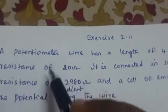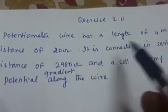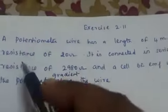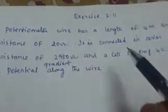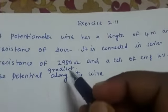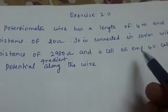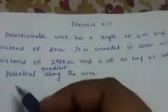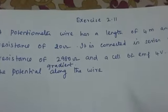Exercise 2.11: A potentiometer wire has a length of 4 meter and resistance of 20 ohm. It is connected in series with a resistance of 2980 ohm and a cell of EMF of 4 volt. Calculate the potential gradient along the wire.